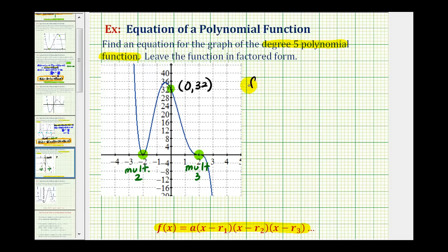So we'll have f of x equals a times, the first zero is x equals negative two. So one factor must be x minus negative two, which would be x plus two.